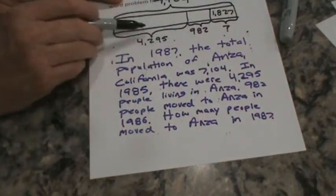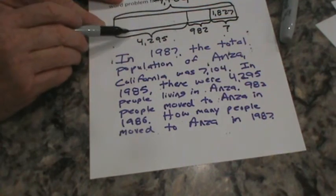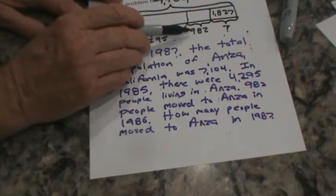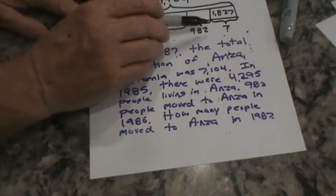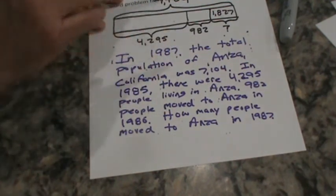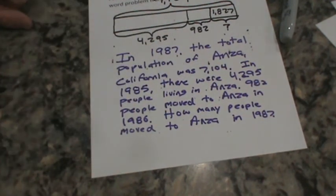We added these two together because we knew that's the population. That was population in 87. 982 people moved in in 86. And then to get to 7,104, we had to subtract these two numbers from that to figure out how many people moved to Anza in 1987 to make the total 7,104.